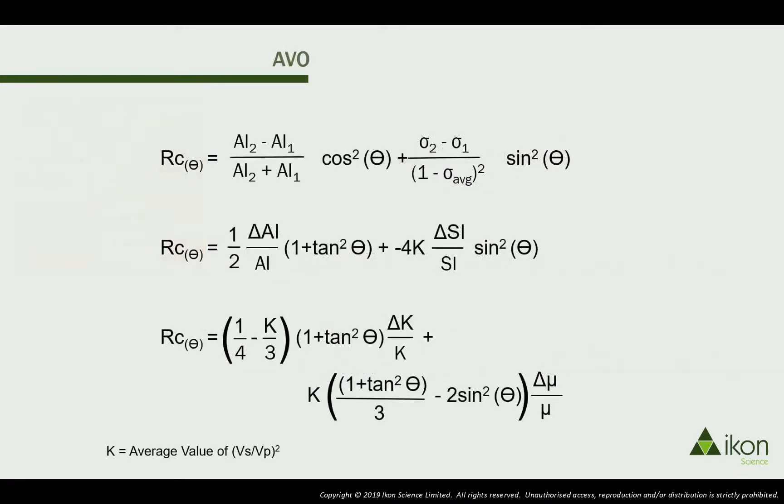However, reflectivity can also be calculated directly from the elastic moduli. The Hilterman approximation to the Zoeppritz equation calculates the reflectivity from acoustic impedance and Poisson ratio contrasts, while Fatti uses AI and SI, and the Gray approximation uses K and Mu.